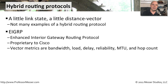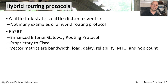EIGRP looks at bandwidth, load, delay, reliability, the maximum transmission unit, and hop count. You can see some of these are related to distance vector, like hop count, and some are related to link state, like bandwidth, load, and delay. It combines all of these things together into an algorithm that it calculates to determine if it should send traffic down one connection or another to get to that final location.